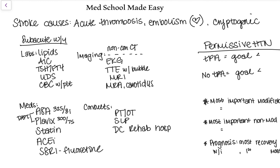For medications: right when a patient comes in, if they're given TPA, you don't want to load them with aspirin 325. But otherwise, you give aspirin 325 as a one-time loading dose, then continue aspirin 81 — a baby aspirin — after that. Plavix is also given as a one-time loading dose of 300 milligrams, followed by 75 milligrams daily. If you've ever heard of DAPT, or dual antiplatelet therapy, this is what they're referring to. The combination of aspirin and Plavix has been shown to significantly reduce a patient's risk of recurrent stroke.